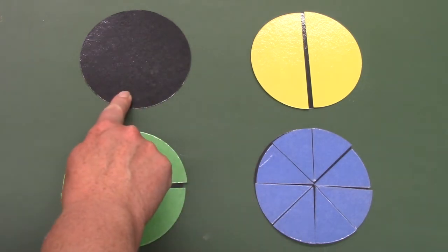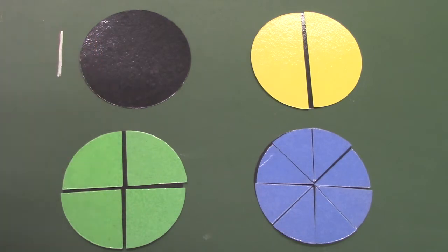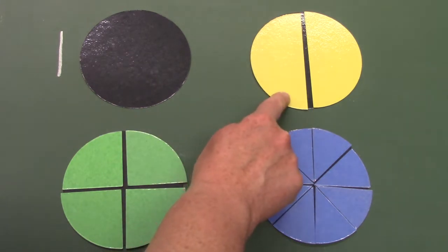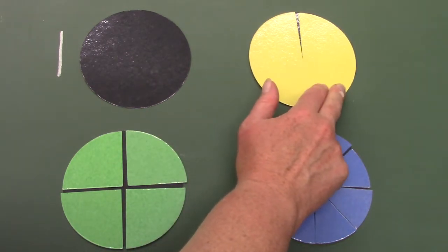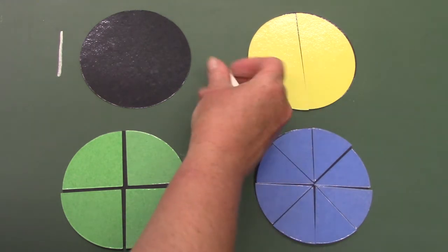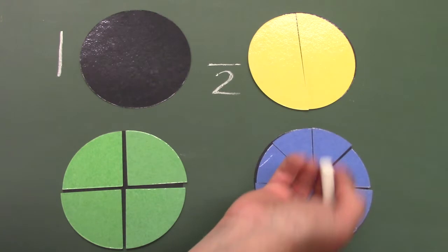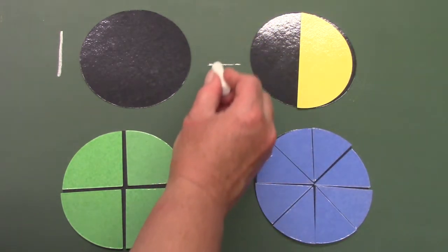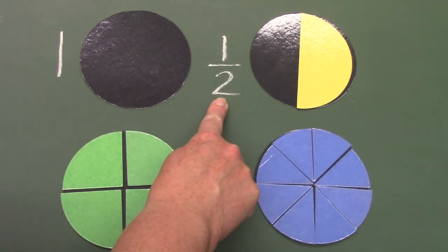Here we have one circle. It is one whole circle. Here we have this circle divided into two yellow pieces. Our one circle has two pieces. If we only have one out of the two pieces, we would say that we have one half of the circle.